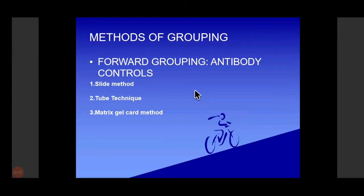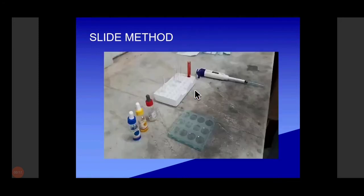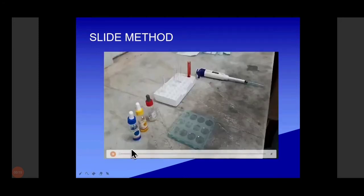Methods of blood grouping: there are the slide method, tube technique, and matrix gel card method. Recently, the matrix gel card method is the new technique for detecting blood grouping and typing. Now we can see a demo of blood grouping and typing.